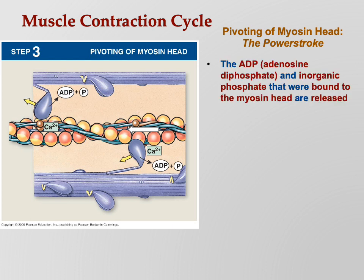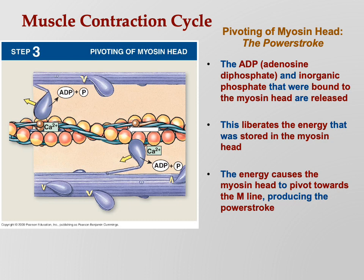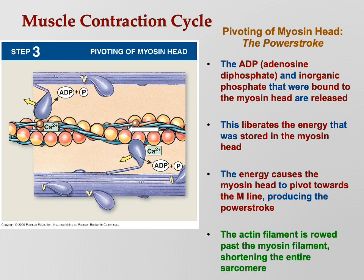That's called the power stroke. The ADP and inorganic phosphate bound to the myosin head are now released, and releasing them releases energy. Phosphate bonds are high-energy bonds - when we break that bond it releases energy, and that energy is what causes the myosin head to pivot. You can see in the illustration the yellow arrow showing the myosin head has pivoted to the left, pulling the thin filament along with it. The actin filament is rowed past the myosin filament, shortening the entire sarcomere.